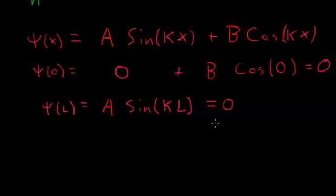Just like before in the other video about solving the classical wave equation, we know that the sine function equals zero when its argument equals some multiple of pi. So kL must equal some multiple of pi, n times pi. And n can be one, two, three, et cetera.